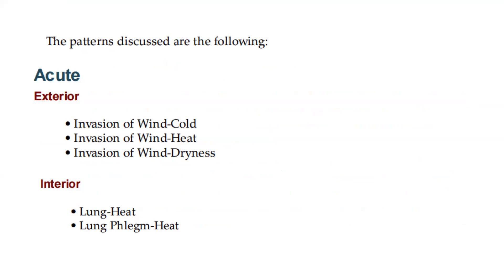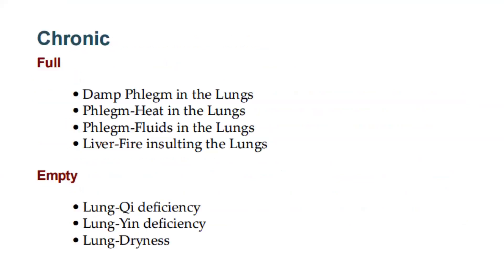The patterns discussed are: for acute — exterior: invasion of wind cold, wind heat, and wind dryness; interior: lung heat and lung phlegm heat. For chronic — full: damp phlegm in the lungs, phlegm heat in the lungs, phlegm fluids in the lungs, and liver fire insulting the lungs. Empty: lung qi deficiency, lung yin deficiency, lung dryness.